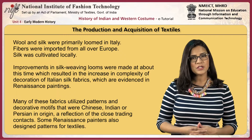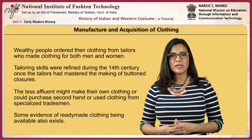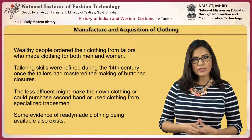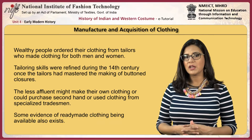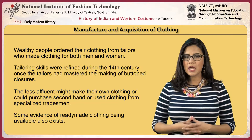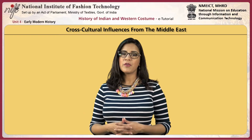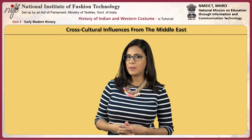Some Renaissance painters also designed patterns for textiles. Wealthy people ordered their clothing from tailors who made clothing for both men and women. Tailoring skills were refined during the 14th century once the tailors had mastered the making of buttoned closures. The less affluent might make their own clothing or could purchase second-hand or used clothing from specialized tradesmen. Some evidence of ready-made clothing being available also exists. Cross-cultural influences from the Middle East also had a profound impact on this period. Once the Ottoman Turks conquered the Byzantine Empire, they remained a constant threat to Eastern Europe.